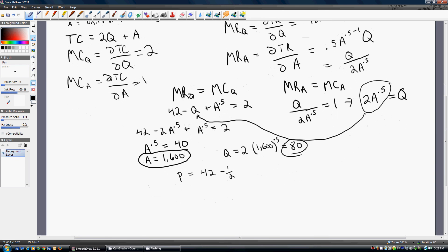So just rewriting that equation now, but plugging in 80 for Q and 1,600 for A, this will just simplify down to $42.